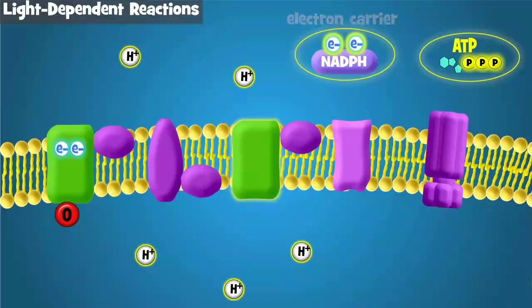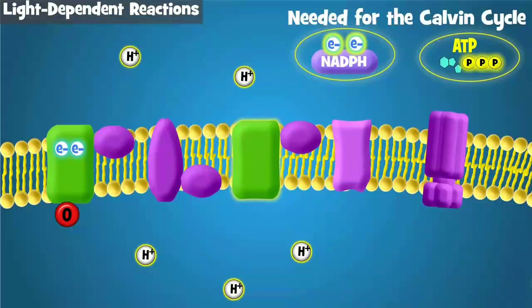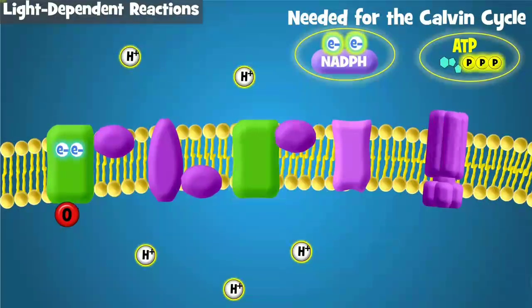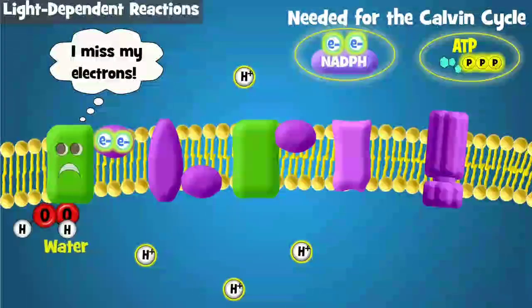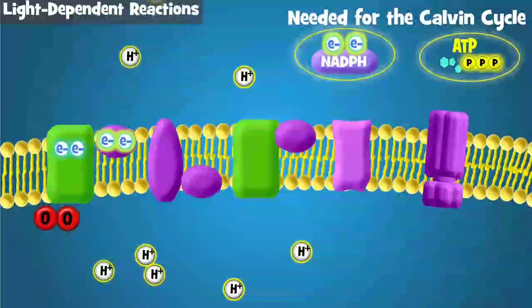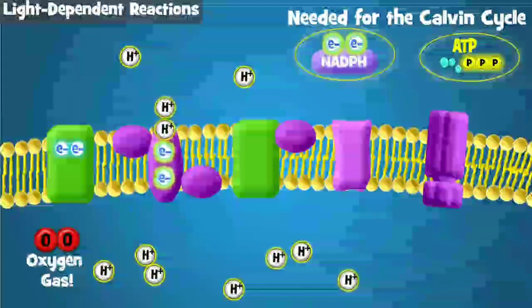It carries electrons and hydrogens to the next set of reactions in photosynthesis, the Calvin cycle. Both ATP and NADPH are critical products of the light-dependent reactions that are needed to make sugar in the Calvin cycle, which we will examine in our next video.